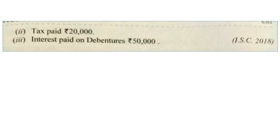All activities will be shifted to their respective parts. Tax paid — opening and closing balance is given, so you will prepare a provision for taxation account. Interest paid on debentures is given; this payment will be added in cash flows from operating activities, and in financing activities the amount will remain rupees 50,000.